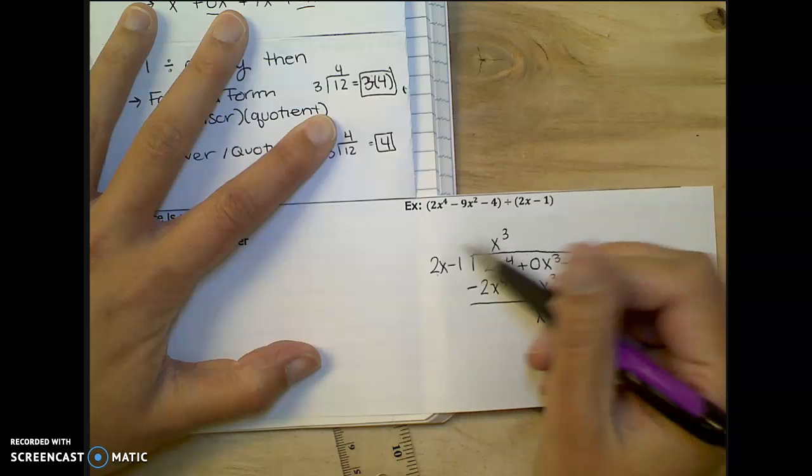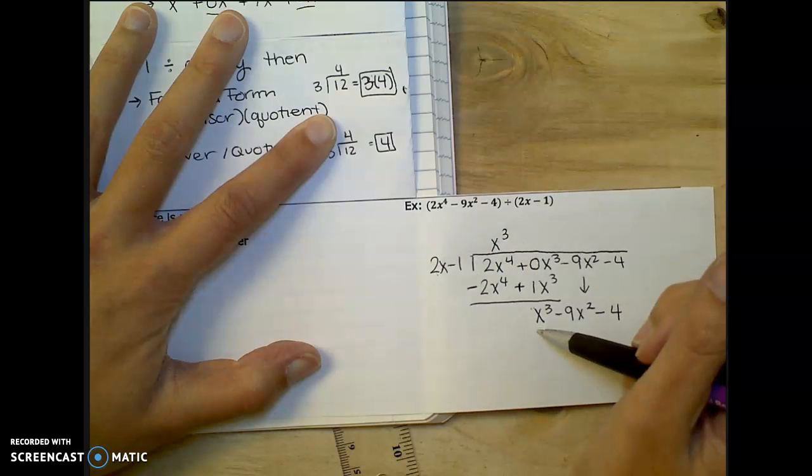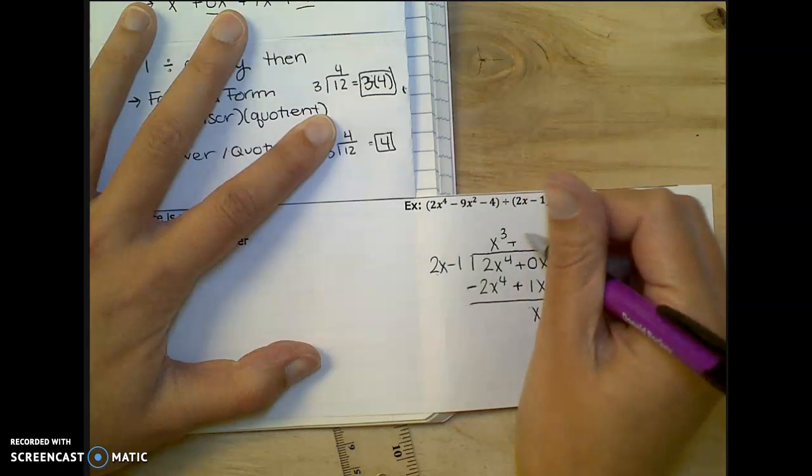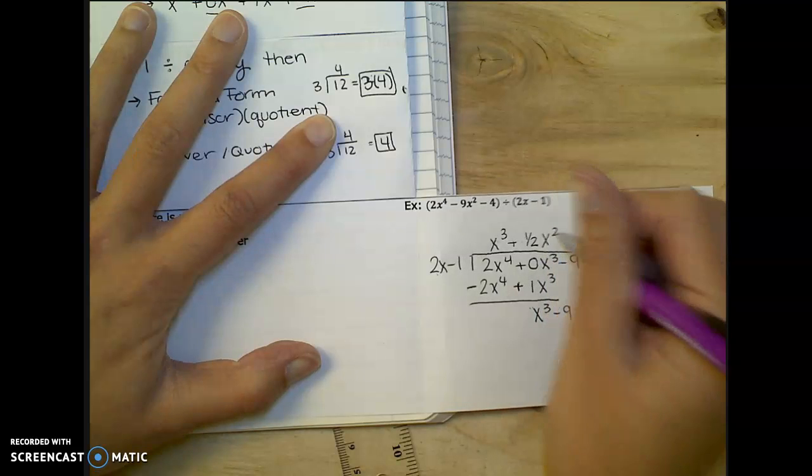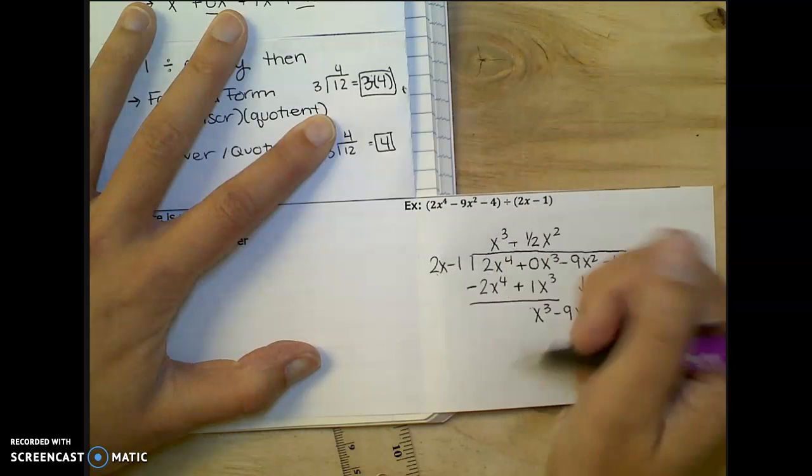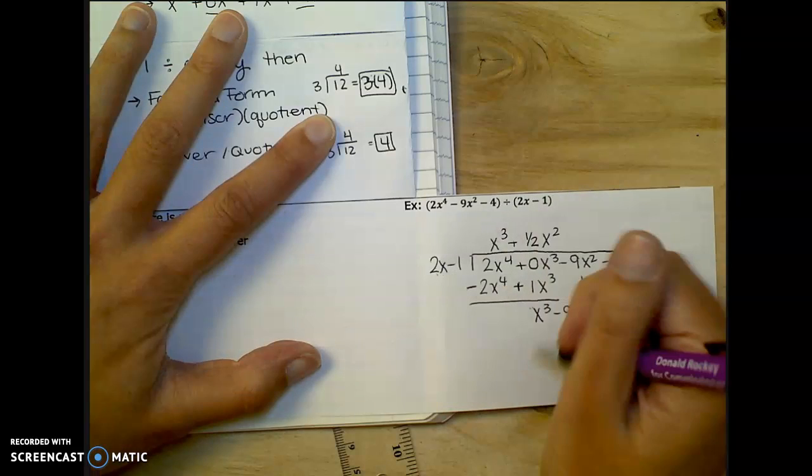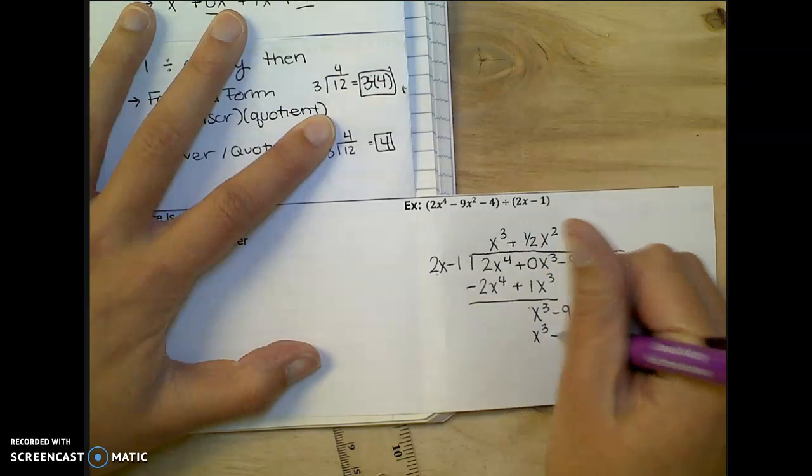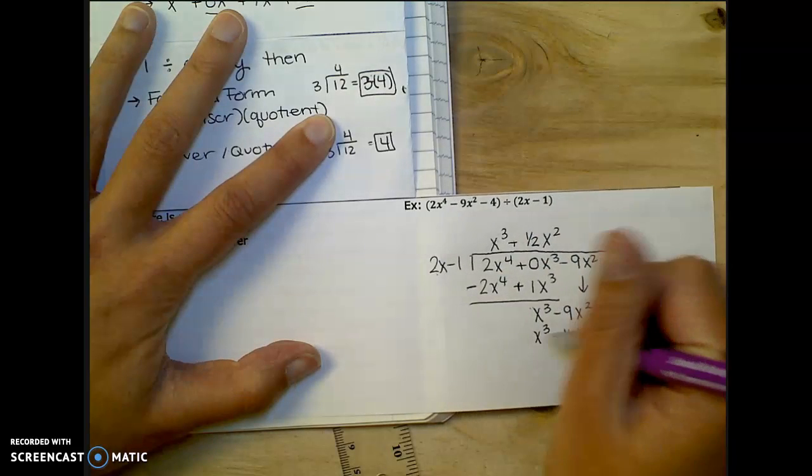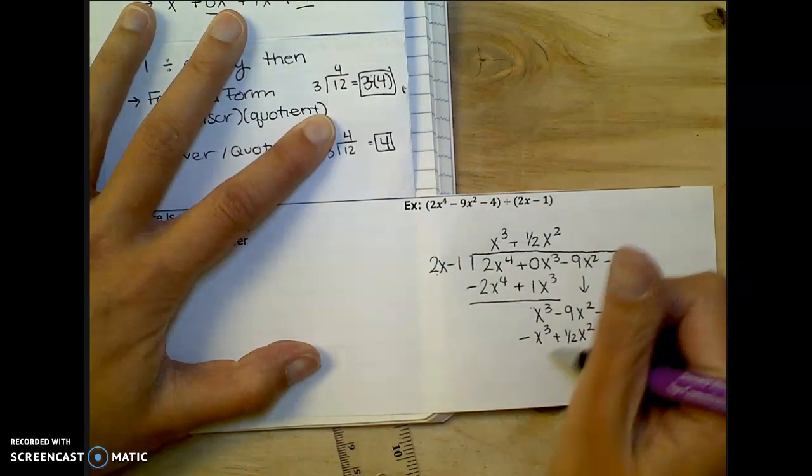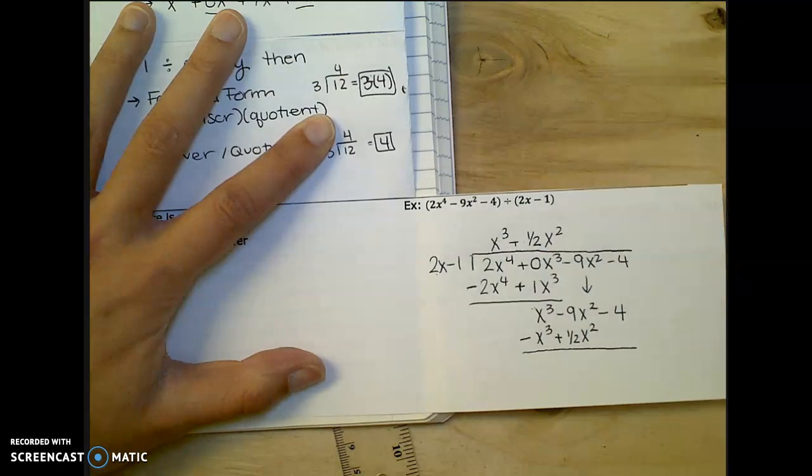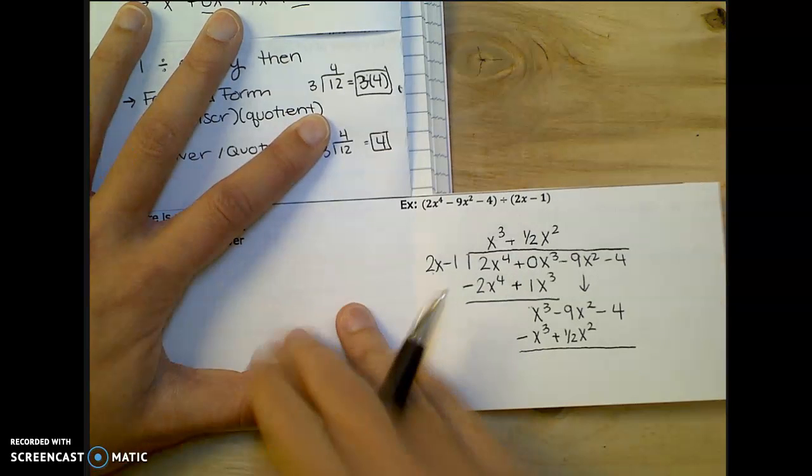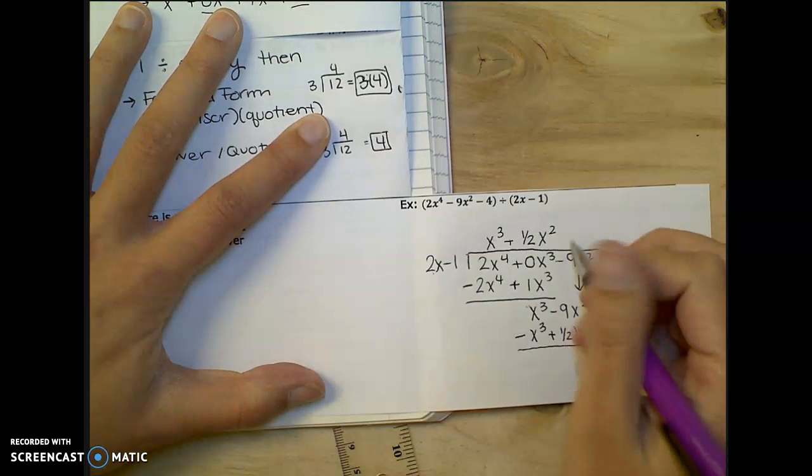And then I go back to the start. And what times 2x would get me x to the third? Oh, I think I'd need half. That's sneaky. x squared. Because half times 2 gives me 1. And x times x gives me x to the third. And then half times negative 1 is negative 1 and a half x squared. And then I subtract both. And that second one really adds. And I wouldn't worry too much about a fraction like that. But I guess it's a good thing that we kind of look at weird ones.